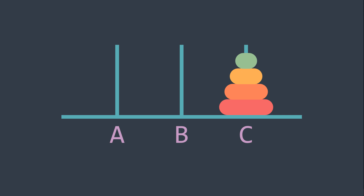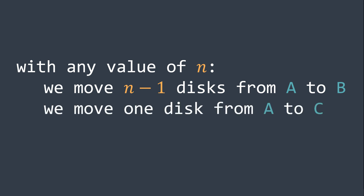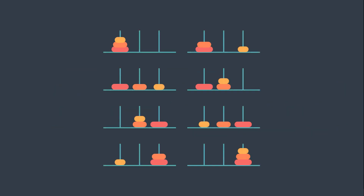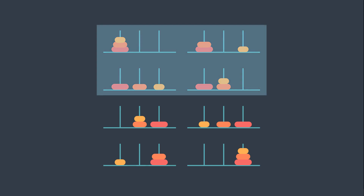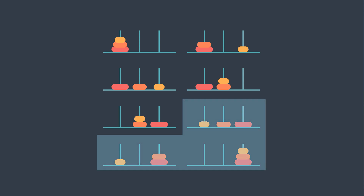Now we can notice a pattern that is being repeated at each execution. The pattern is: with any value of N, first we move N-1 disks from A to B, then we move 1 disk from A to C, and then we move those N-1 disks from B to C. You can verify by yourself that it's what we did each time. For example, with N equal to 3, here are the 8 steps — here is the part where we move N-1 disks to B, here is the part where we move a disk from A to C, and here is the part where we move those N-1 disks from B to C.